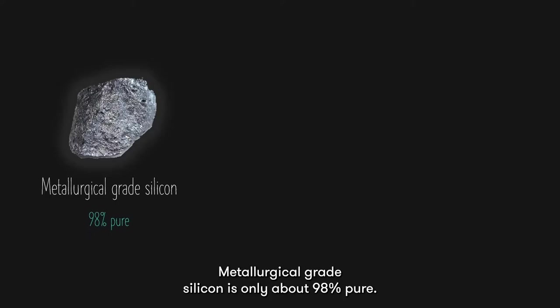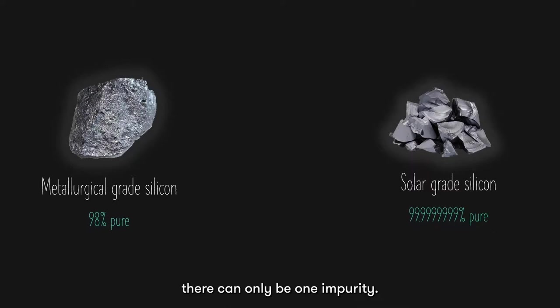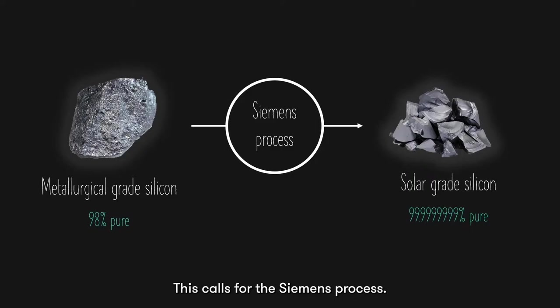Metallurgical-grade silicon is only about 98% pure. To qualify for solar-grade silicon, the silicon has to be 99.99999999% pure. This means that in every 10 million atoms, there can only be one impurity. This calls for the Siemens process.